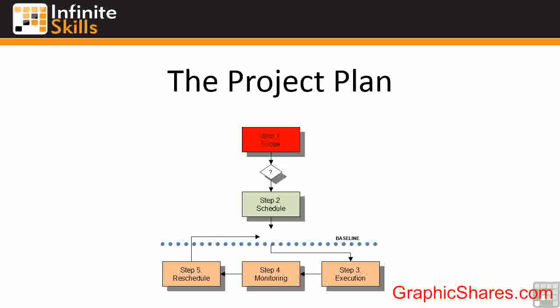So we go through step one without Microsoft Project, then build the project using step two — the actual schedule. We then effectively snapshot the schedule at that stage and then go through the execution, monitoring, and rescheduling, keeping an eye on measuring ourselves back to where we said we would be, to see how far we've slipped. So we have a continual loop at the bottom until the project is complete.